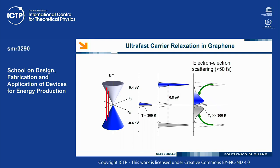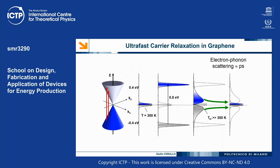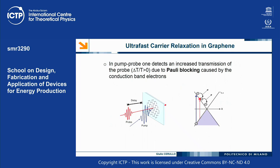The first thing that happens is that these electrons very quickly thermalize in less than 50 femtoseconds, establishing a Fermi-Dirac distribution. The electrons equilibrate with themselves but are very hot — reaching temperatures of thousands of degrees — while the graphene lattice is still cold. The next step is electron-phonon scattering, which takes place on the order of a picosecond. Graphene then recovers its original state within a few picoseconds, demonstrating an extremely fast optical response.